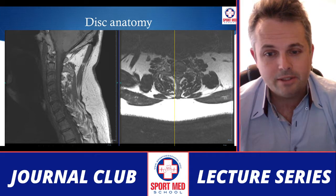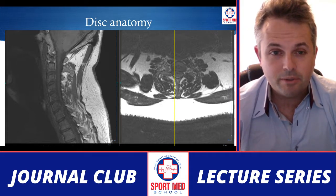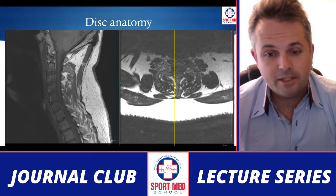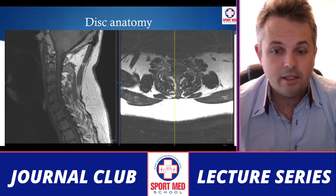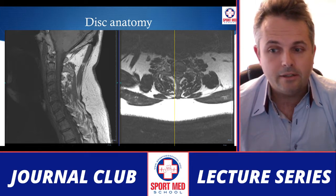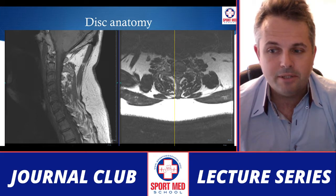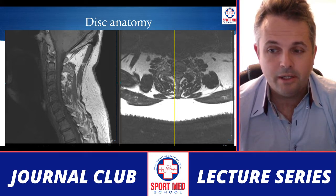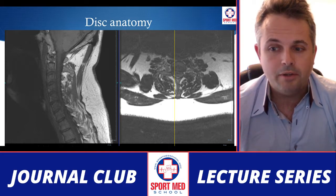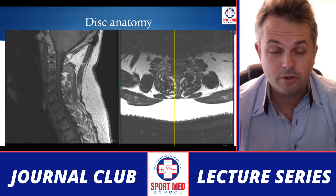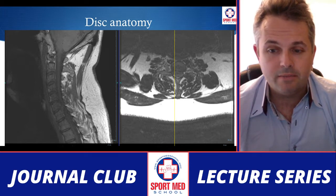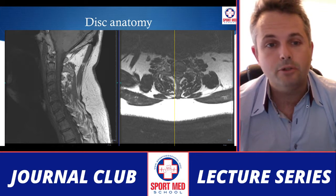Going back to disc anatomy, this is a sagittal MRI — a T1 weighted image, unlike the previous normal one. At the C6-7 level you'll see a disc protruding backwards. On the right is an associated axial image showing that same disc. On the right side of the axial image, corresponding to the patient's left side of the body, the intervertebral foramen is open and unobstructed. On the left side of the image, corresponding to the patient's right side, that space is occluded by the disc posteriorly.